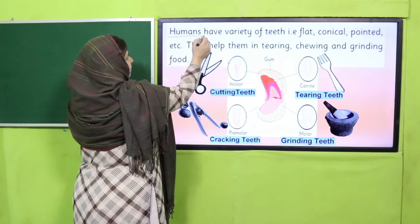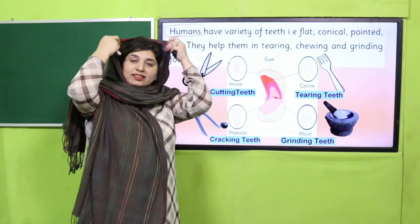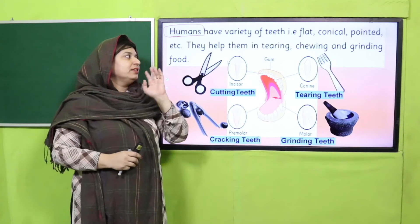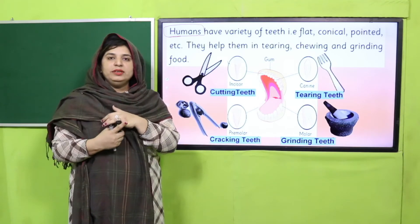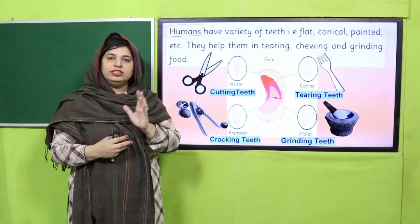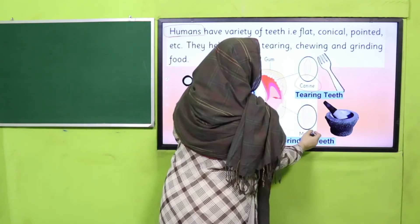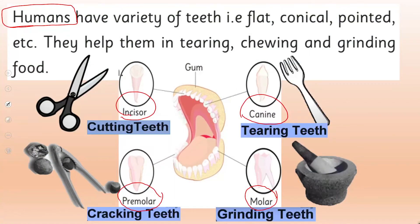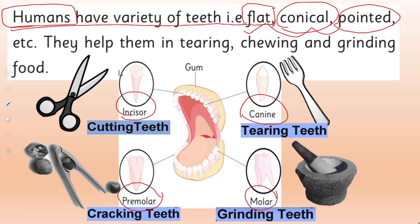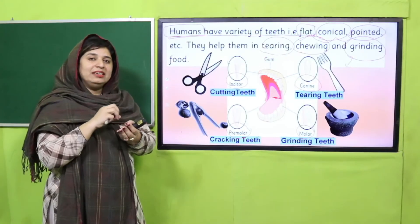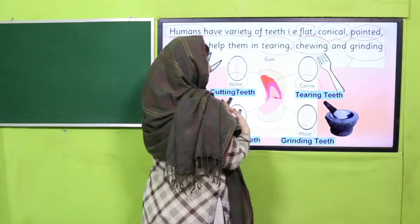In the case of humans, the most advanced and developed form of animals, we are omnivores — we are able to eat both flesh and vegetables. So we have a variety of teeth. There are basically four types of teeth inside the human mouth cavity, all different in shape — some are flat, some are conical, and some are pointed. This variety of teeth helps us to tear, chew, and grind our food — further crushing it down into the smallest particles.